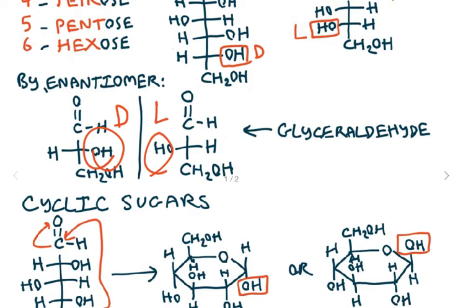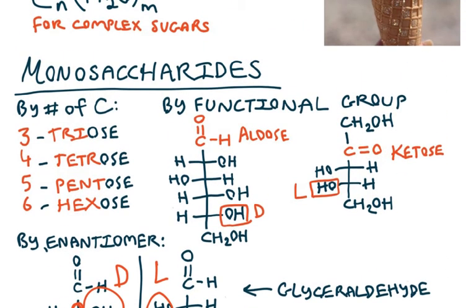Now, not all sugars are going to rotate light in the same way as glyceraldehyde does, but we do use this convention for all of them. So we always want to look at the second to bottom OH, or the first OH that has this kind of cornery thing as its carbon in the Fischer projection. So up here, we can see this one is D, and this one is L.